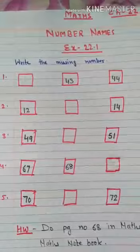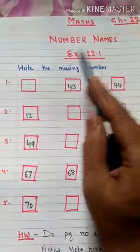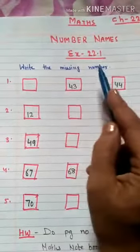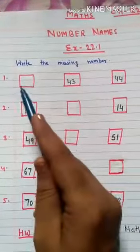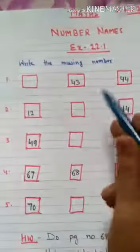So come to the exercise, exercise 22.1. The question is write the missing number. We have to write or put the missing number.